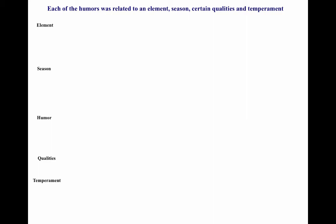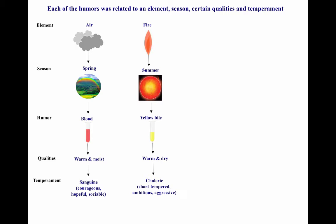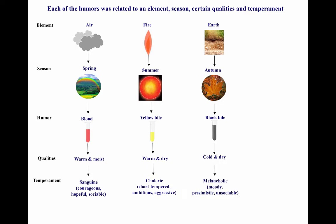Each humor was related to an element, season, and temperament. Air was associated with spring; its humor was blood, qualities warm and moist, temperament sanguine — courageous, hopeful, sociable. Fire was associated with summer; yellow bile, warm and dry, choleric — short-tempered, ambitious, aggressive. Earth was represented by autumn and black bile — cold and dry, melancholic, moody, pessimistic. Water was represented by winter and phlegm — cold and moist.